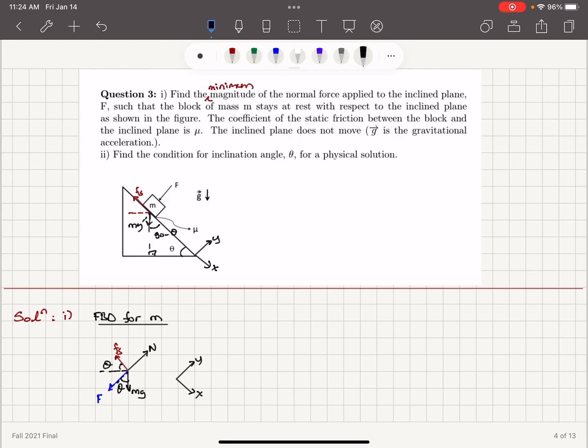And if I write the condition for equilibrium, the net force on the y-axis should be equal to 0. So what are the forces on the y-axis? The normal force, F, and the component of the weight on the y-axis. So normal force is in j-hat direction, F and mg cosine theta are in minus j-hat direction. This should add up to 0. Therefore, the normal force is equal to F plus mg cosine theta.